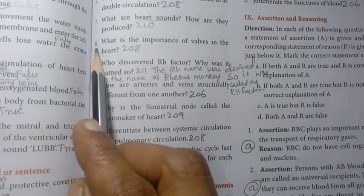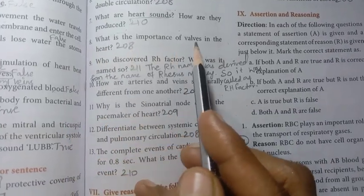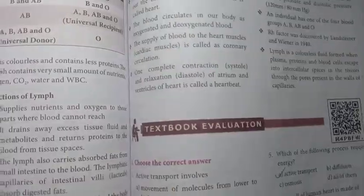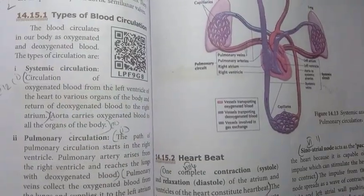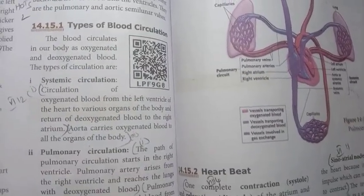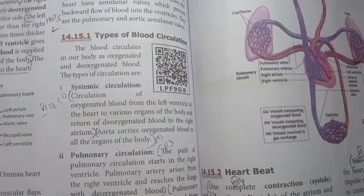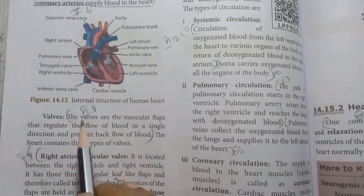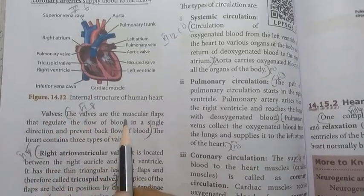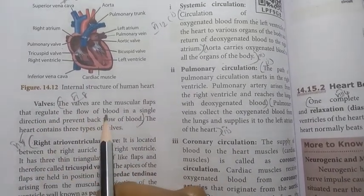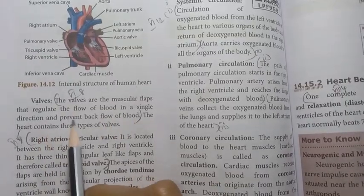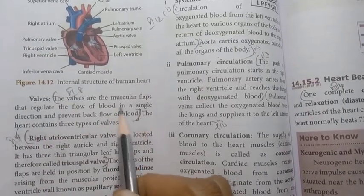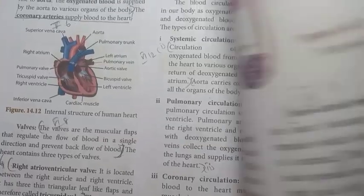Question number 8: what is the importance of valves in the heart? Page number 208. The valves are the muscular flaps that regulate the flow of blood in a single direction and prevent backflow of blood. That is the answer for Roman number 6, 8th question.